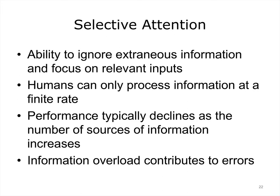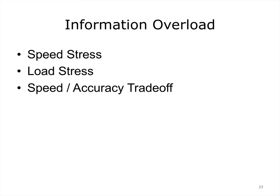We have the ability to ignore extraneous information and focus on relevant information. However, humans can only process information at a finite rate, and performance typically declines as the number of sources of information increases. Information overload is a common cause of performance errors. If you're under pressure to increase the pace of your performance, or burdened by a heavy information load, the quality or accuracy of performance is likely to degrade — there is a speed-accuracy trade-off. Think of physicians and nurses in an emergency room working with several critical patients at the same time in a high-stress, high-interruption environment. These factors could contribute to errors.